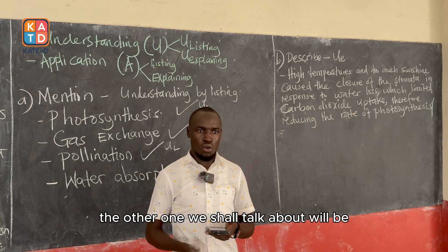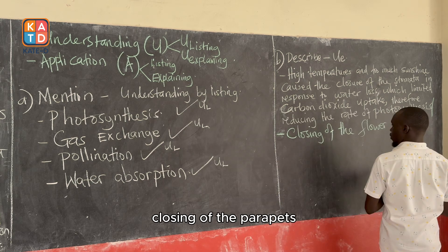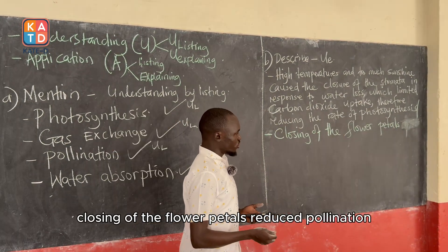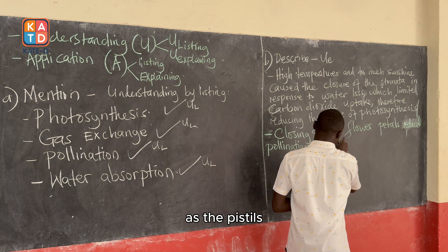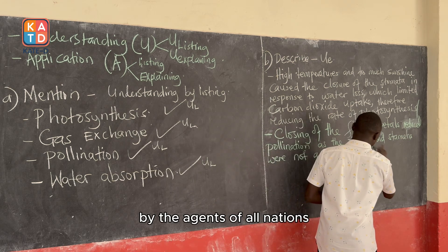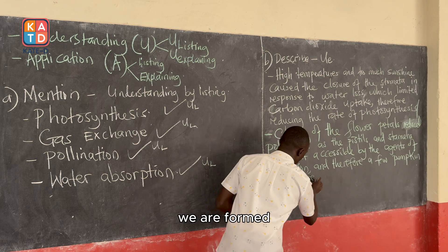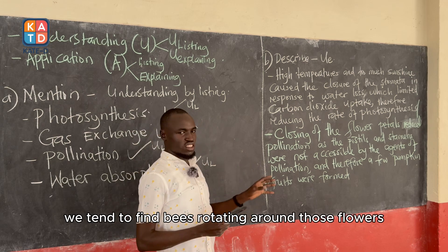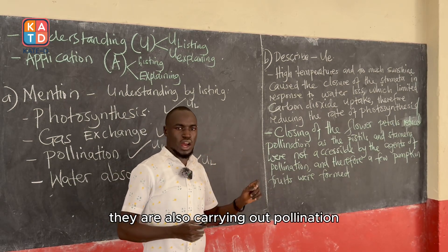The other one we shall talk about is pollination. Closing of the flower petals reduced pollination, as the pistils and stamens were not accessible by the agents of pollination — therefore a few pumpkin fruits were formed. Remember, when pumpkins are flowering, we tend to find bees rotating around those flowers. These bees collect nectar but at the same time are also carrying out pollination.